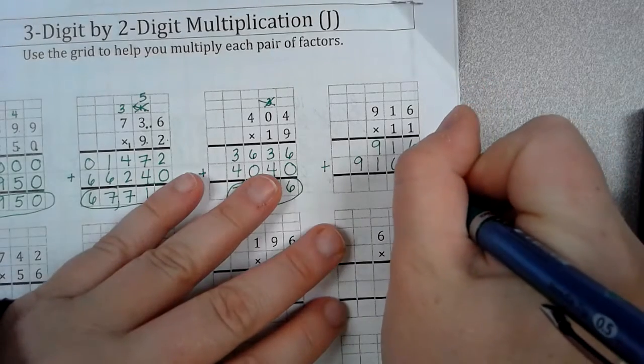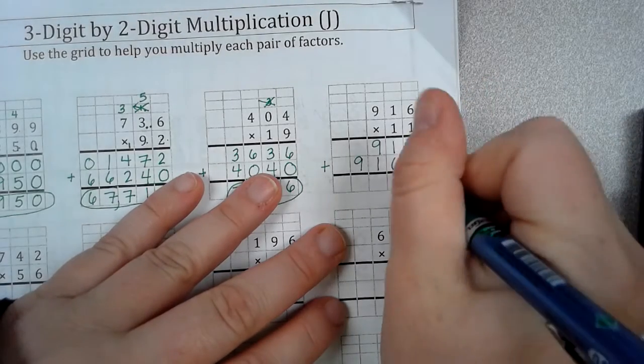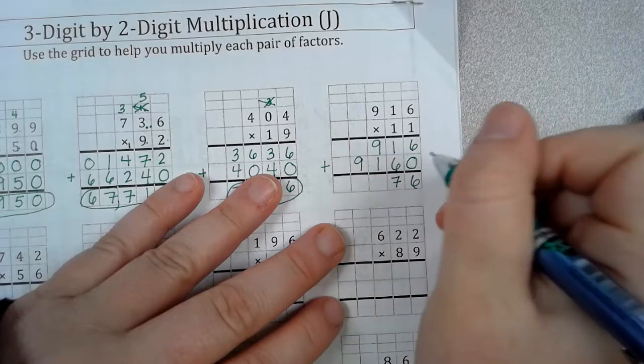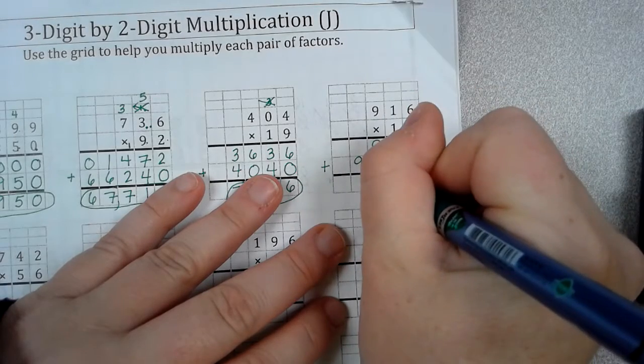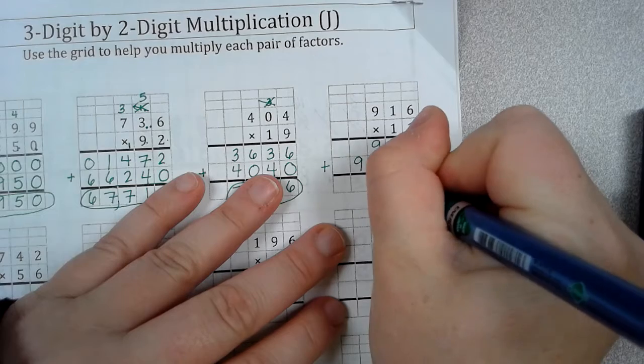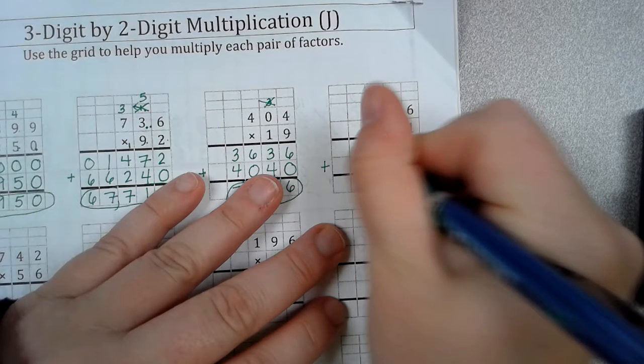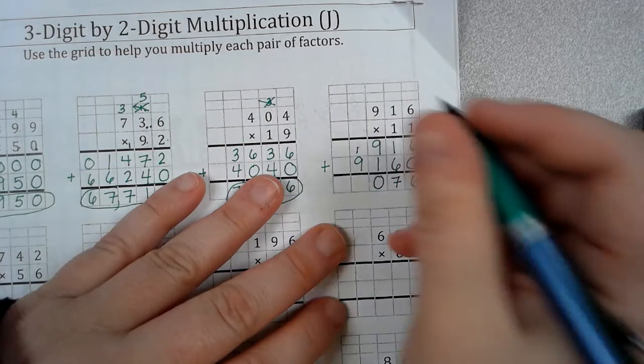6 plus 0 is 6. 6 plus 1 is 7. 9 plus 1 is 10. Remember, we cannot put more than one digit in a place value. So, put my 0. Carry my 1. And, then 1 plus 9 is 10.